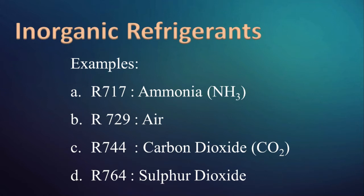So it is R717. Similarly, R744 is carbon dioxide and R764 is sulfur dioxide. Average molecular mass of air is 29, therefore R729 is air. Let us see their properties and individual applications.